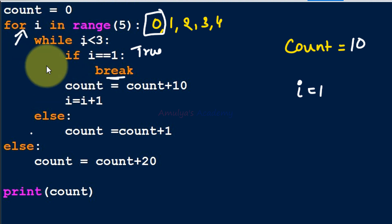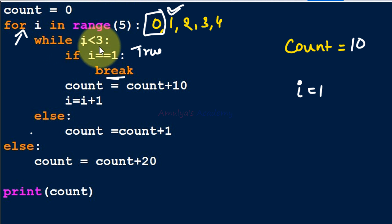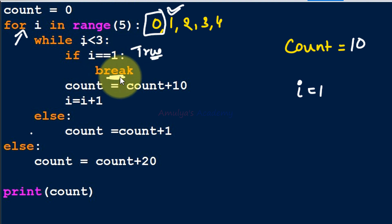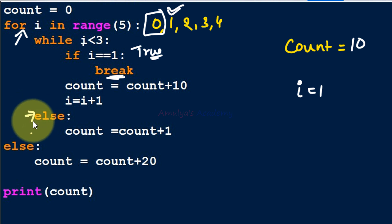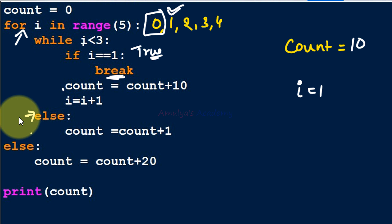Now i becomes 1 for the for loop's next iteration. We check while i < 3: 1 < 3 is true. We check if i == 1 — yes, it is true — so break executes again and we come out of the while loop. Control moves to the while's else block, but because the loop was terminated by break, the else part is not executed.